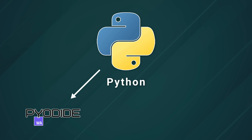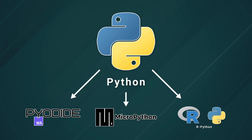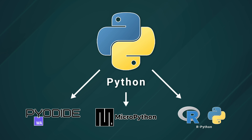Pyodide offers a Python interpreter alongside the standard Python scientific stack. MicroPython provides an efficient Python stack targeted at embedded systems. Meanwhile, RPython offers an actual compilation of Python scripts to the WebAssembly binary instruction format.